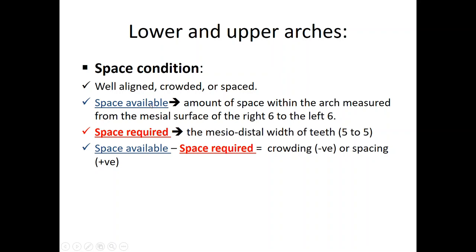Space available is the amount of space within the arch. It is measured from the mesial surface of the right first permanent molar to the left first permanent molar. We don't include the molar itself, but we use its mesial surface as a reference to measure the space available, and of course we follow the shape of the arch for each individual patient.